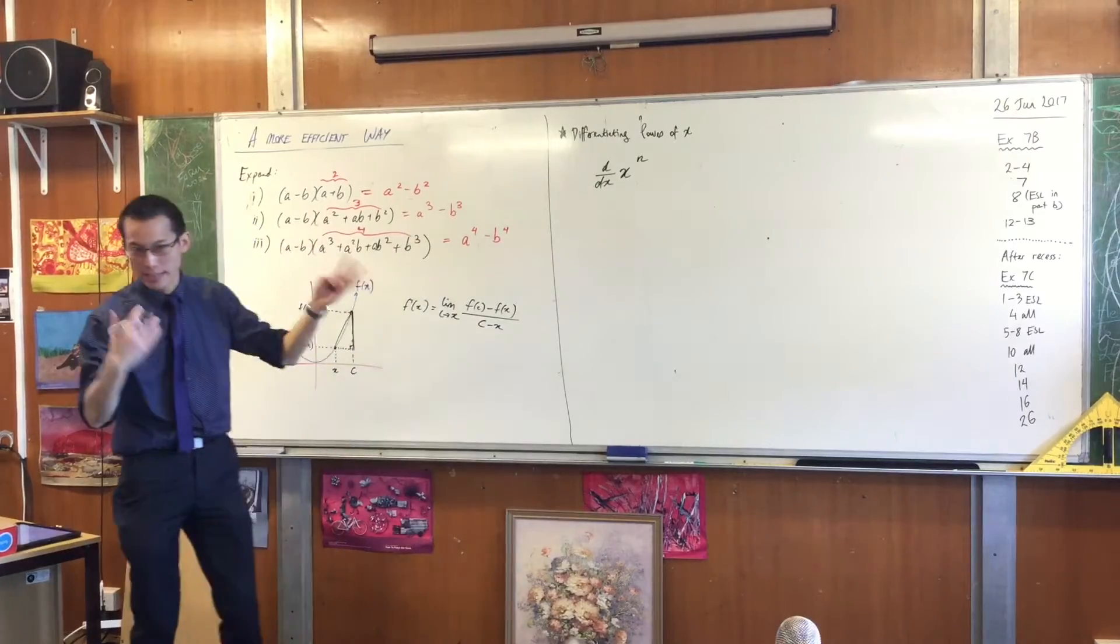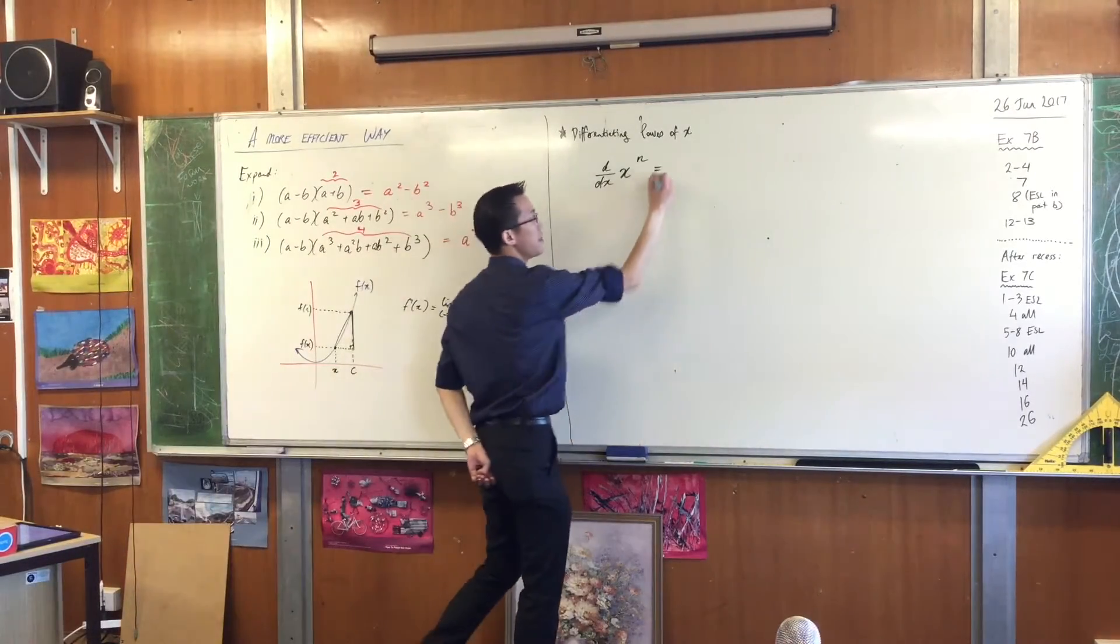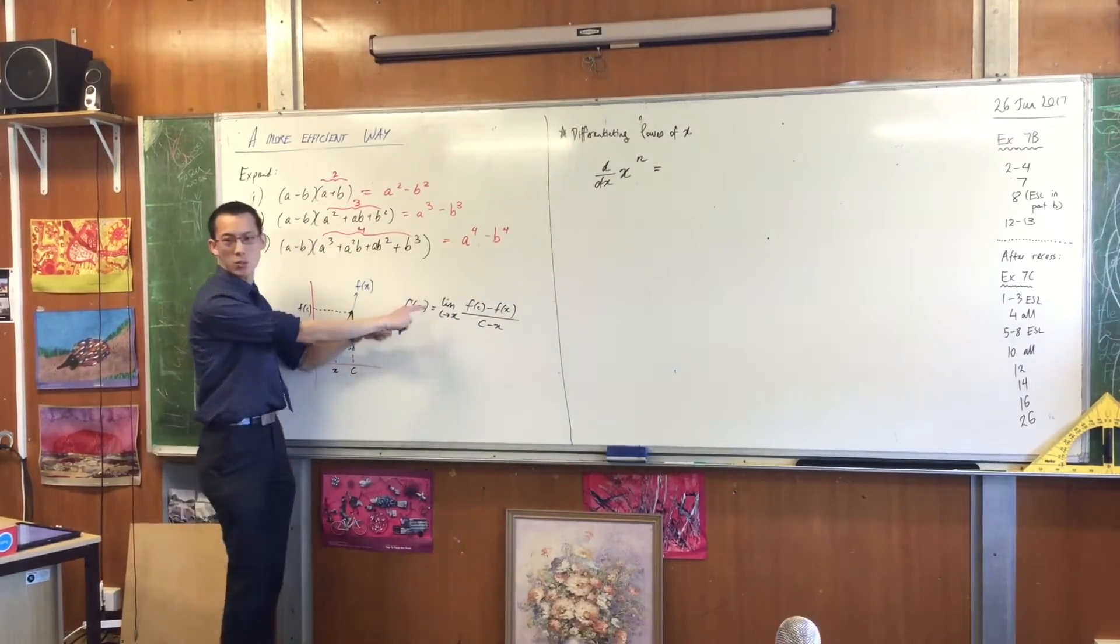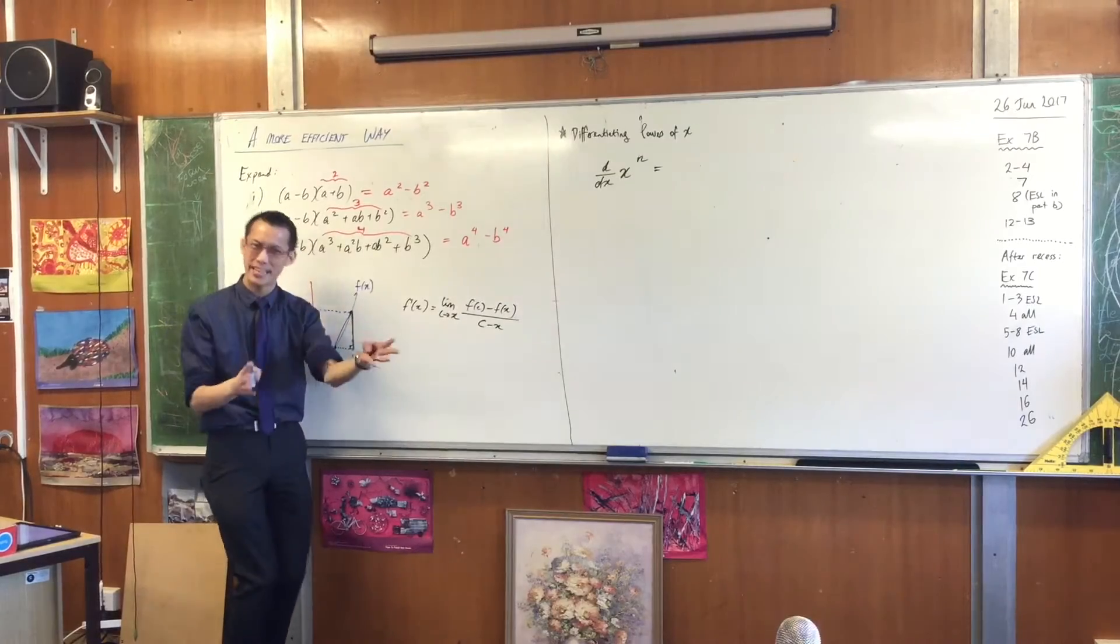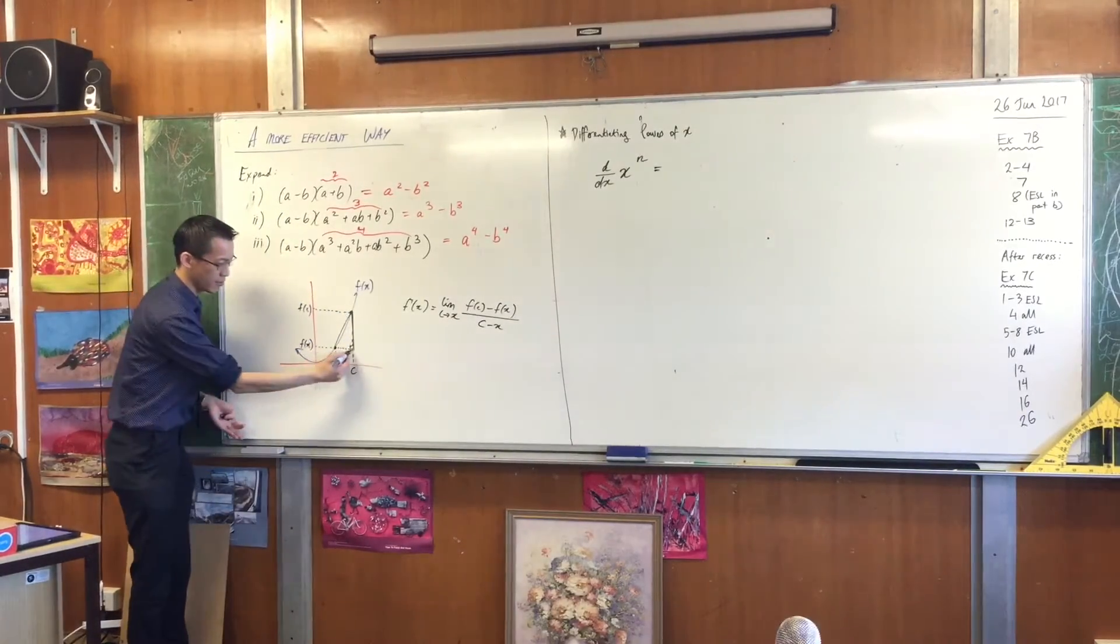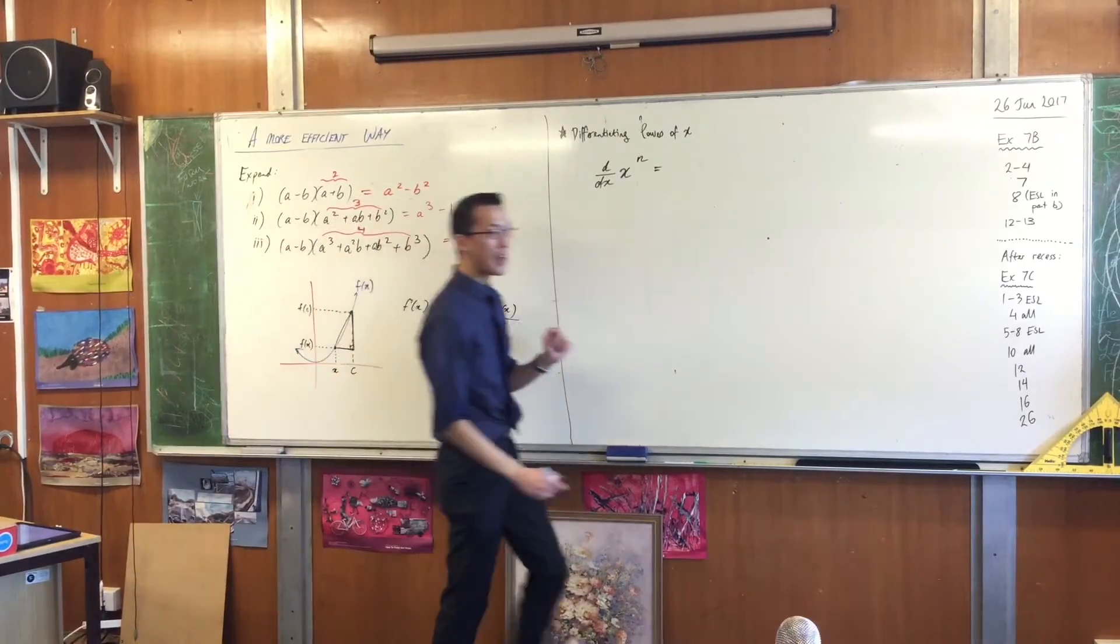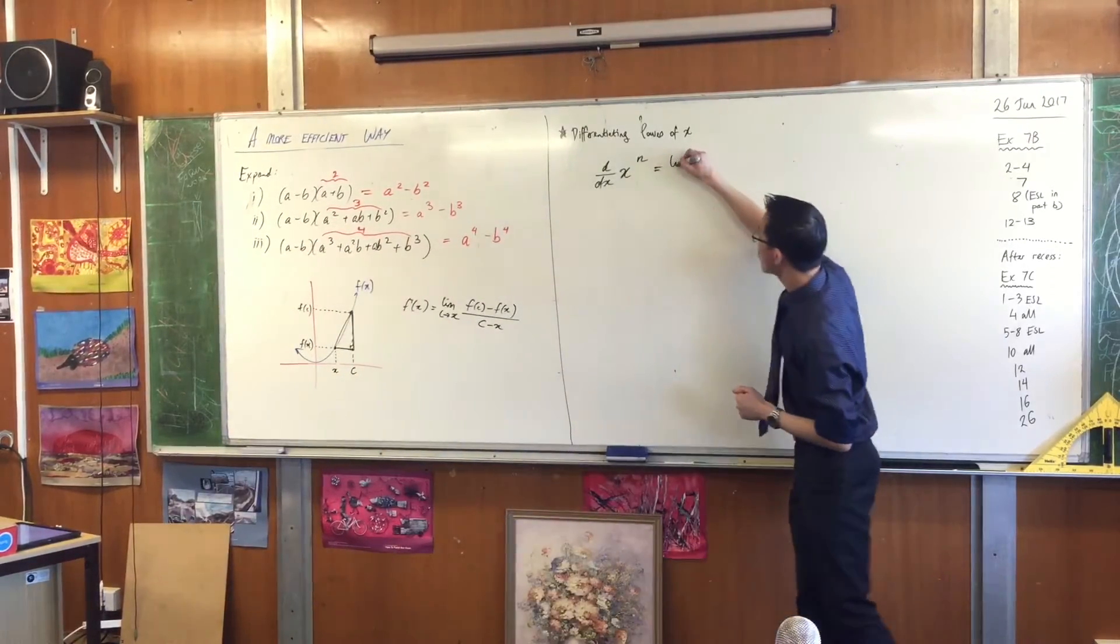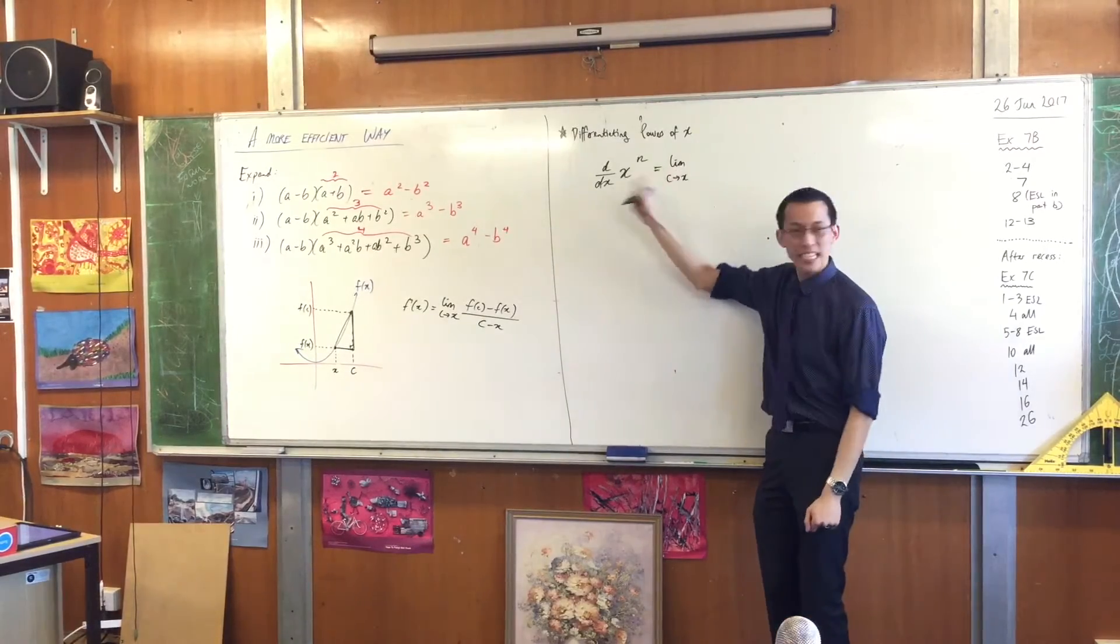So if I want to differentiate X to the power of some number, M or N, anything we'd like at the moment. Then I'm going to appeal to first principles, but I'm going to do it this way. I'm going to do it this way, and you will see why this way of setting it out, even though it points to the same reality, rise over run, is going to be a little more useful to us in this case. Can someone help me work out? After you write limit as C approaches X, for this particular function, what is going to be inside the limit?